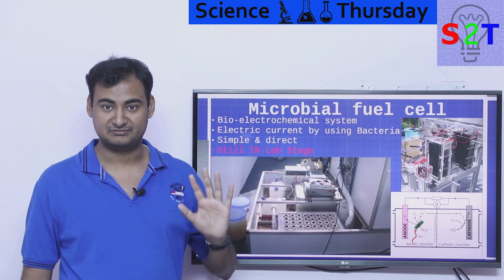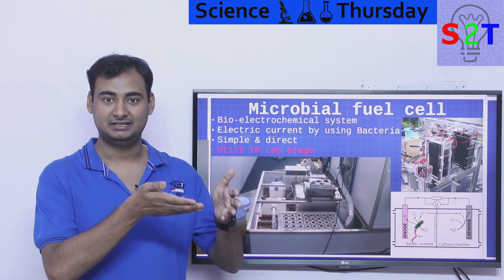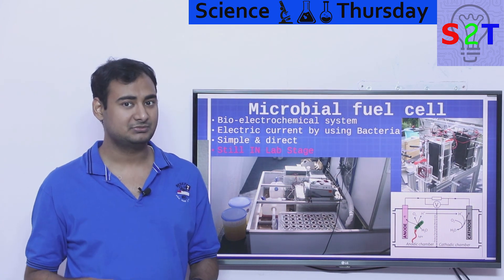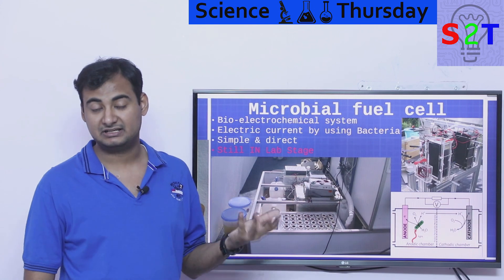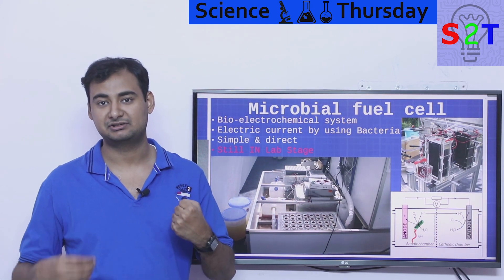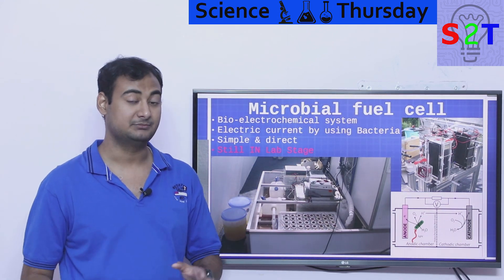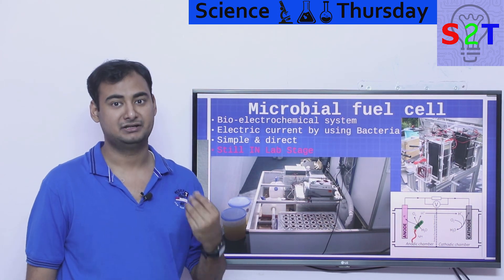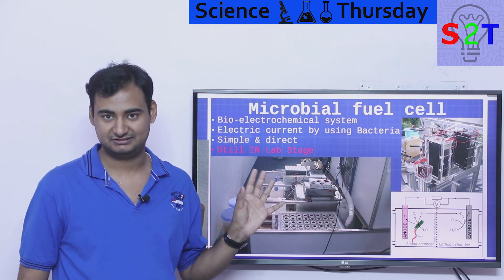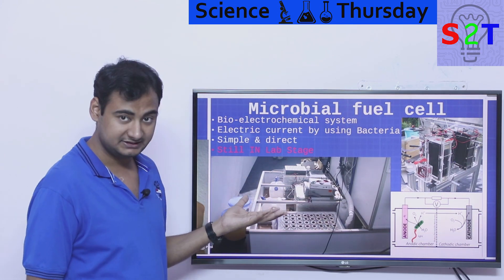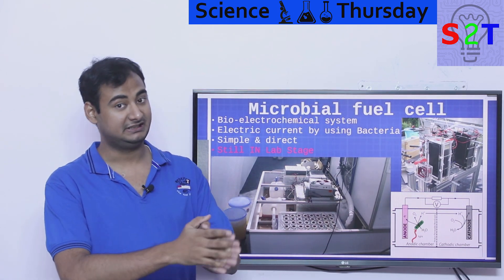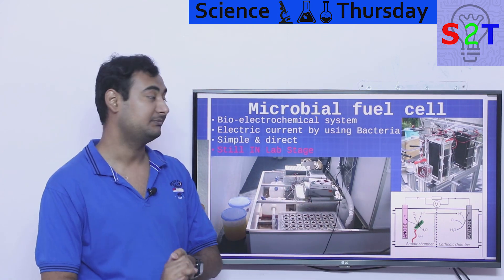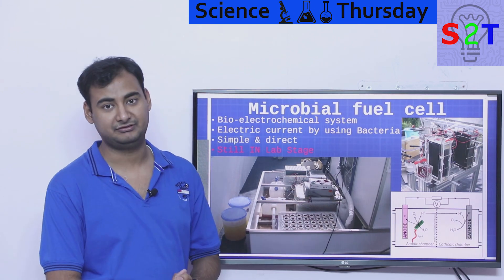This technology is actually old — someone figured it out in the early 1900s — but nobody understood the mechanism until recently. It's a very promising technology: it takes the electrochemical imbalance created by urine in water and converts it into electricity. It's still largely in the lab stage — you can buy units for lab experiments — but it's not yet at commercial plant scale. Some plants do use it, and it has tremendous potential.